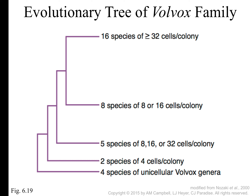If you look at how volvox species are related to each other, there are unicellular volvox. 'Genera' is a classification term — like you are the species Homo sapiens and Homo is the name of your genus. In the genus volvox, there are four species with only one cell, two species with four cells, five species with eight to 32 cells per colony, eight species with eight to 16 cells per colony, and 16 species with greater than 32 cells per colony.